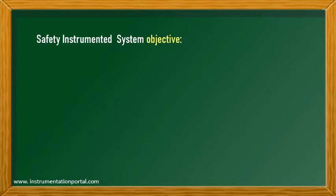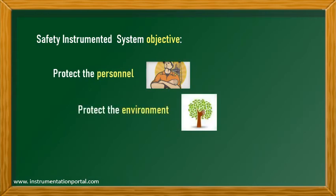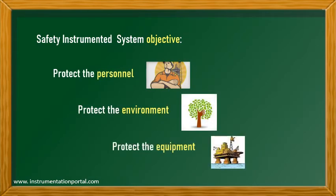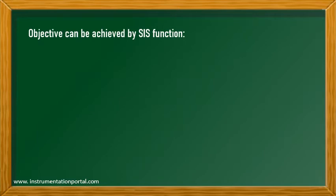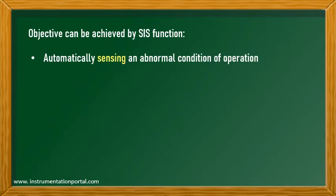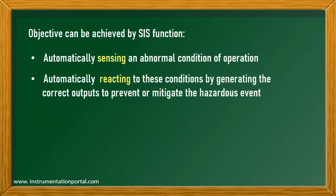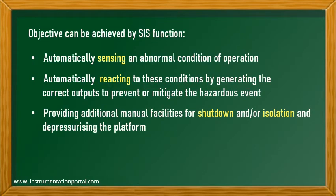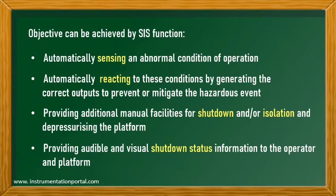The objective of SIS is to provide protection for personnel, environment, and equipment. That objective can be achieved by automatically sensing an abnormal condition of operation, automatically reacting to these conditions by generating the correct outputs to prevent or mitigate the hazardous event, providing additional manual facilities for shutdown and isolation and depressurizing the platform, and providing audible and visual shutdown status information to the operator and platform.